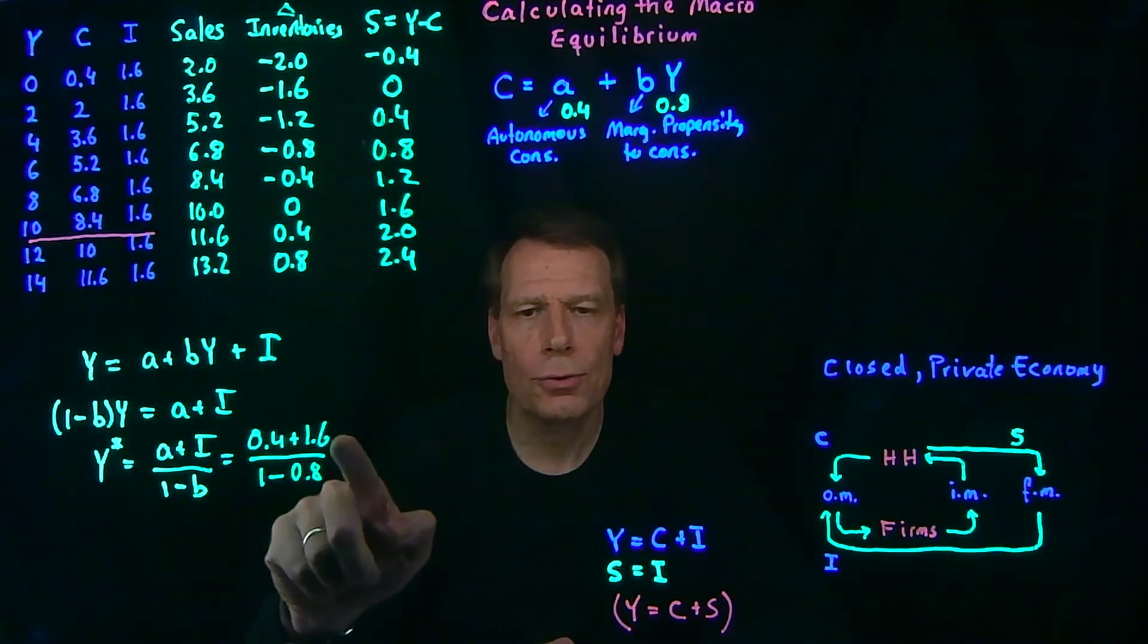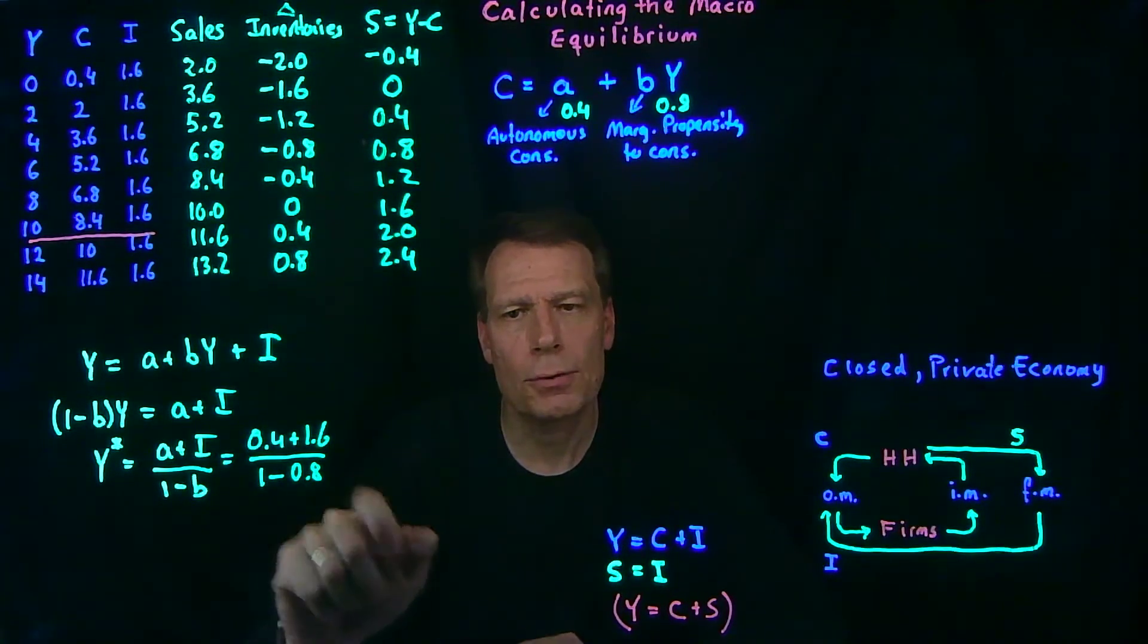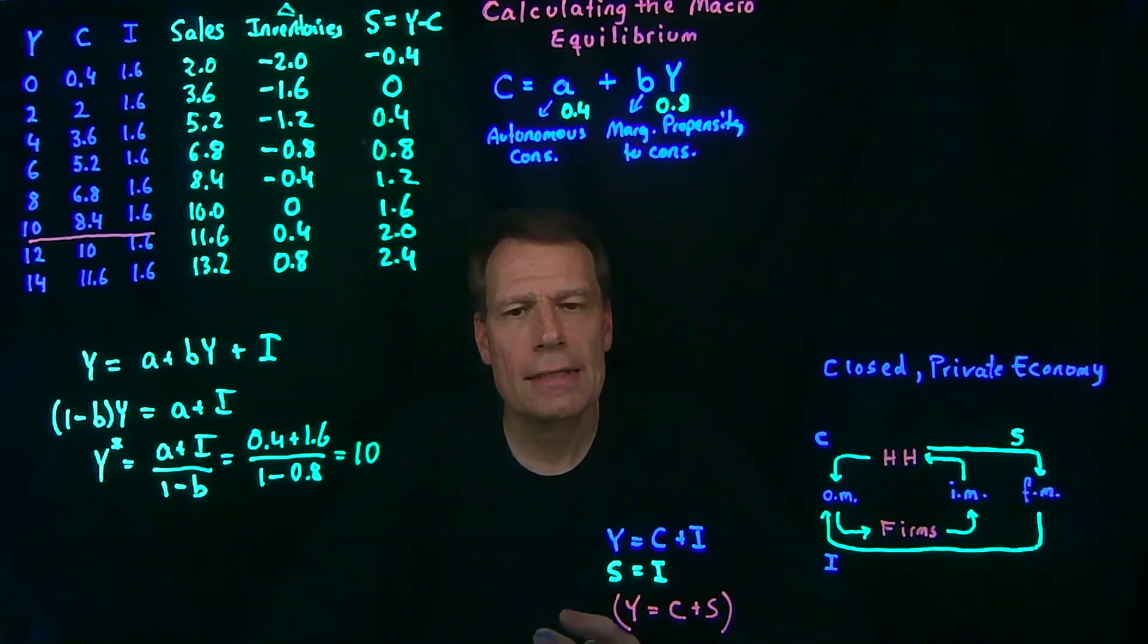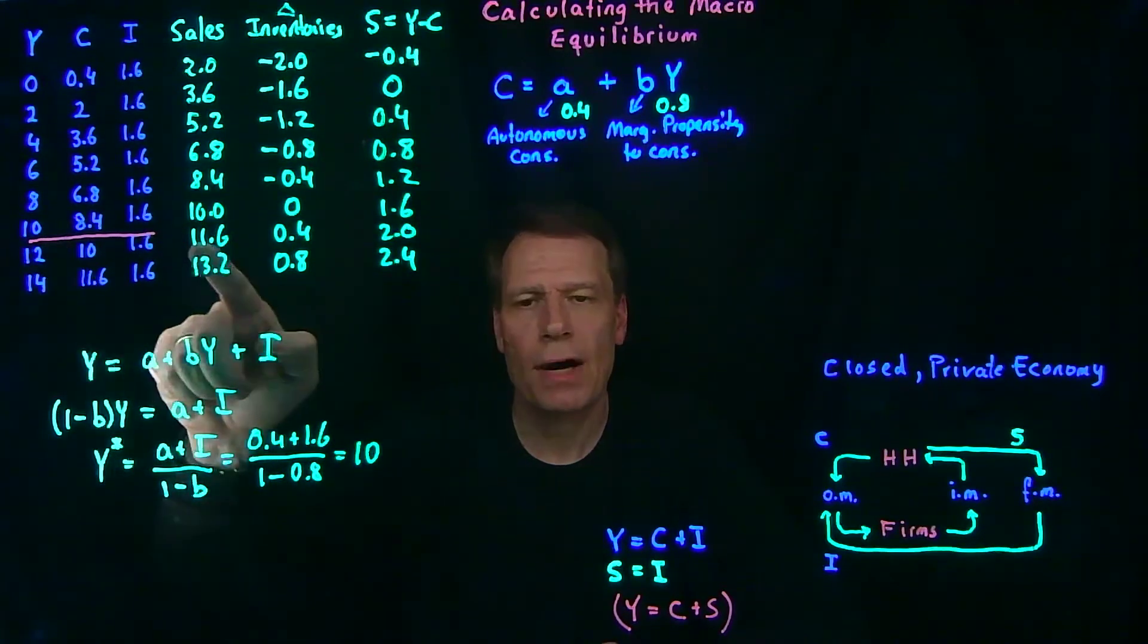In other words, we're going to get 2 divided by 0.2, which is just equal to 10. So that's the equilibrium level of GDP, and that's exactly what we found in the table.